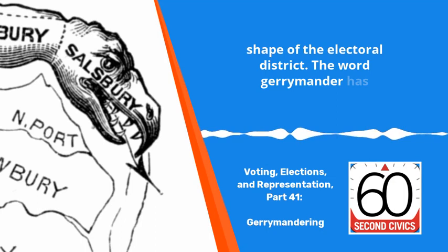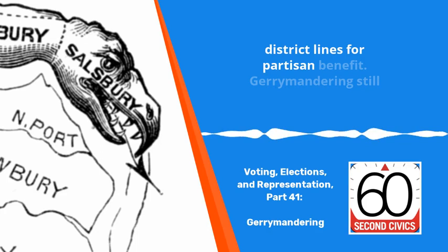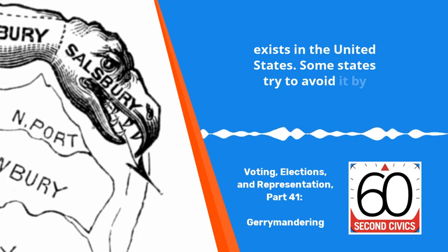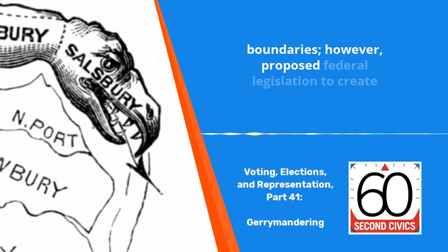The word gerrymander has since been used to describe the practice of drawing political district lines for partisan benefit. But gerrymandering still exists in the United States. Some states try to avoid it by giving nonpartisan commissions the power to draw district boundaries. However, proposed federal legislation to create such commissions within all states has not been successful.